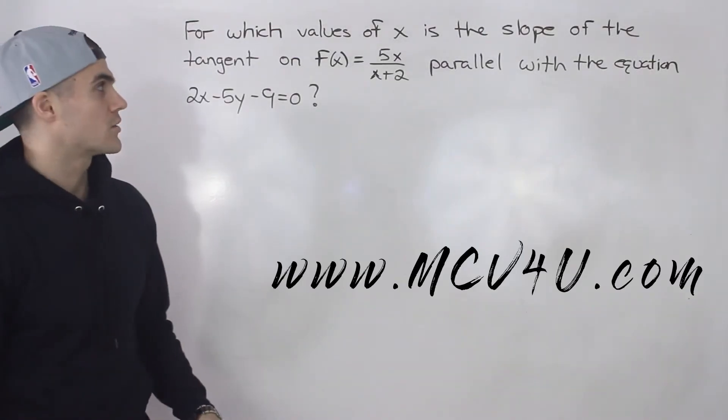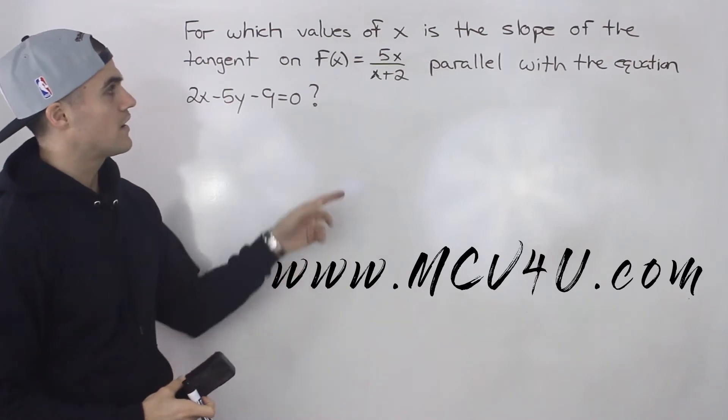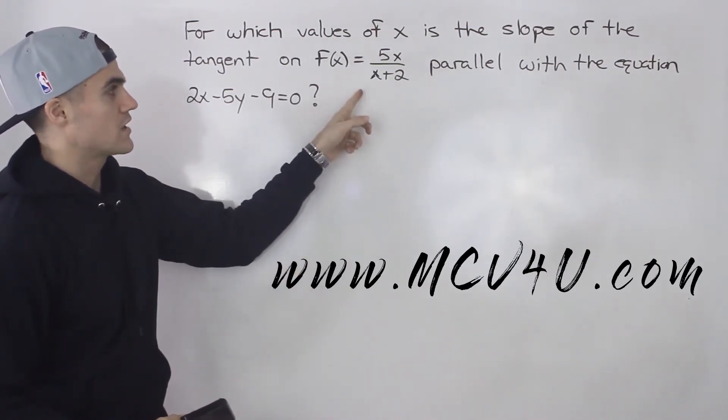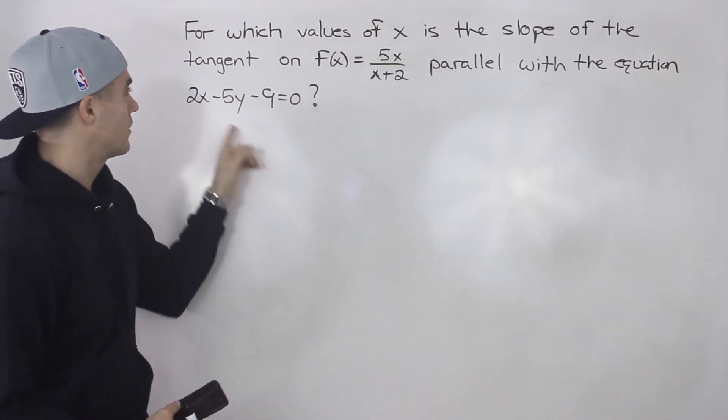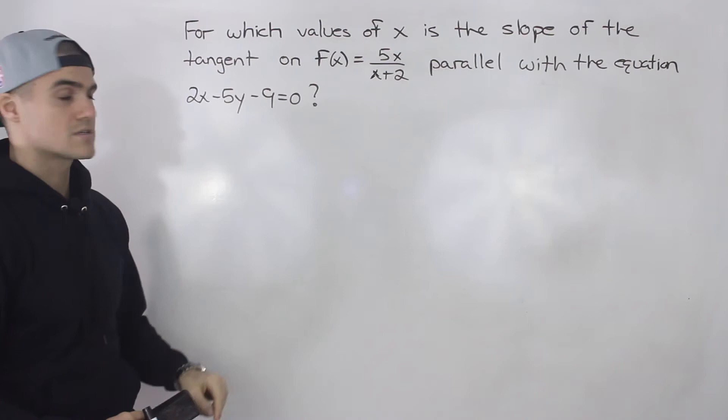What's up everybody? Welcome back. Patrick here. Moving on to another question with derivatives. We have to find the values of x for which the slope of the tangent on the function 5x over x plus 2 is parallel with the equation 2x minus 5y minus 9 equals 0.